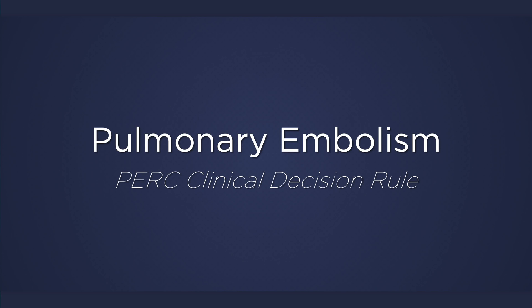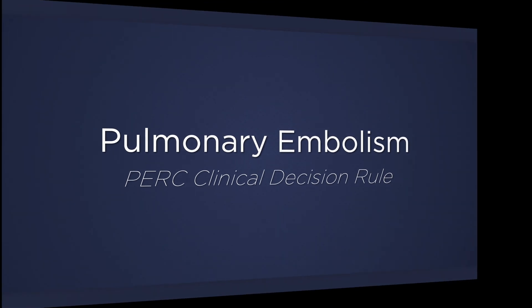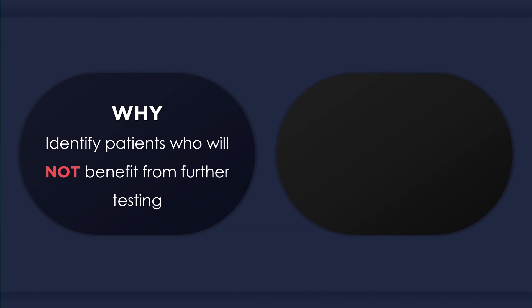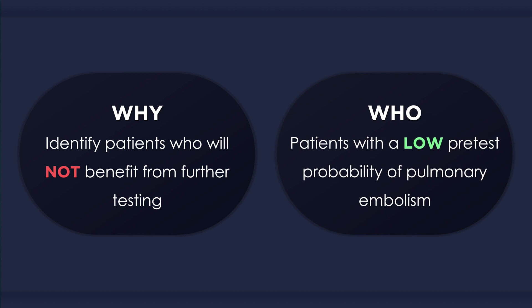This lecture will discuss the pulmonary embolism rule-out criteria. The PERC clinical decision rule can help identify patients who will not benefit from further testing. However, it can only be applied to patients who have a low pretest probability of a pulmonary embolism. Utilization of these criteria is not recommended for patients in which the degree of suspicion is intermediate or high.